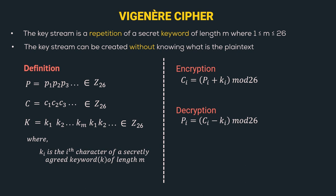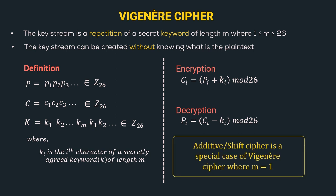In additive cipher, we used to add or subtract the key from the plain text or cipher text, and here we are doing the same. The difference is that in additive cipher we used to have a single letter key, and here we have a longer key. Hence, additive cipher is a special case of Vigenère Cipher where m is equal to 1. Since Vigenère uses a stream of characters, it comes under polyalphabetic ciphers.